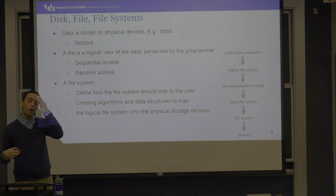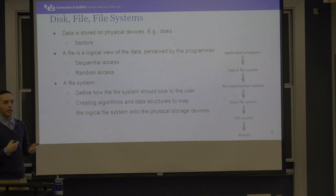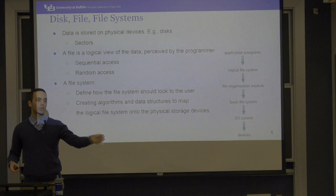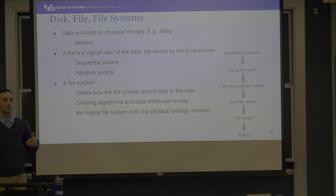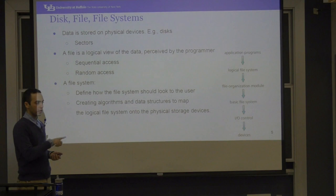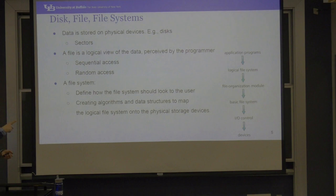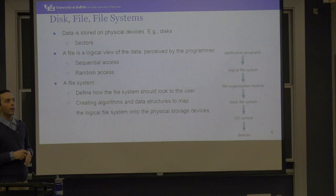A file can have sequential access or random access. Like a text file, you open it and read one byte at a time, or you can move to the middle of the file. If you have a movie and want to jump to the 40th minute, there are headers that tell you where in the contiguous logical view of the file that is. So that's random access — you can jump around in a file.